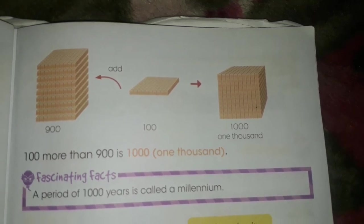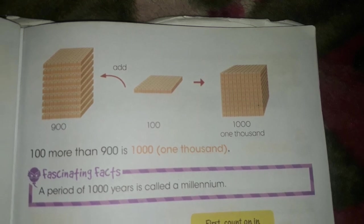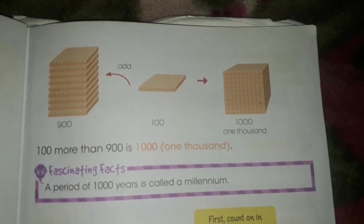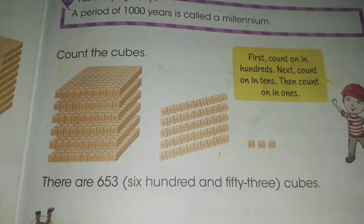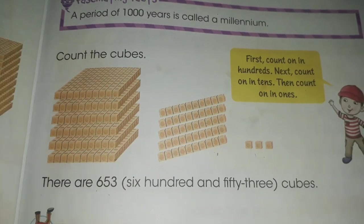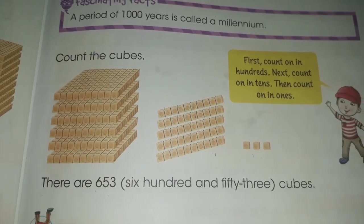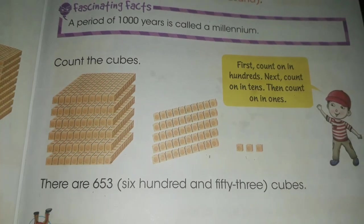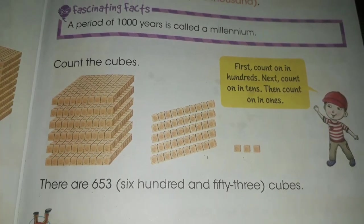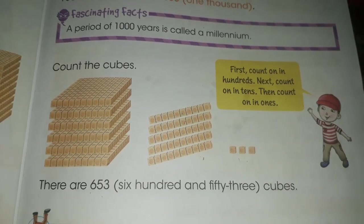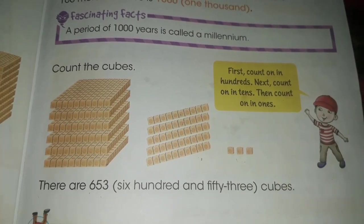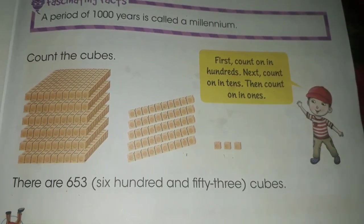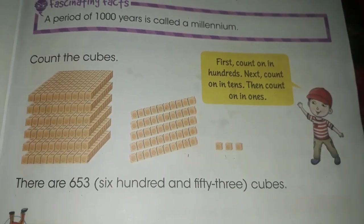Here is a fascinating fact for you: a period of one thousand years is called a millennium. This little kid Bubbles is telling you that first count on in hundreds, next count on in tens, then count on in ones.